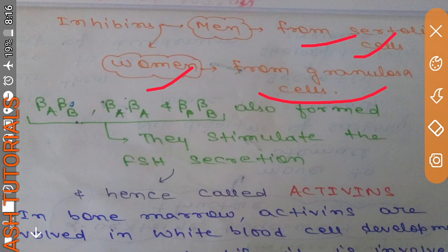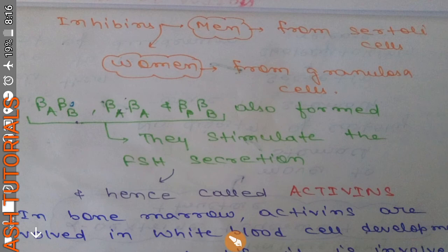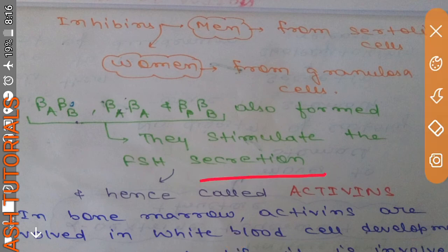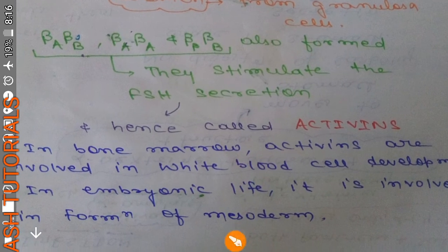So there are three possibilities: beta A-beta B, beta A-beta A, and beta B-beta B. These three are also formed. These three will not inhibit FSH secretion — instead they always stimulate FSH secretion, so they are known as activins, because they are promoting FSH secretion. Inhibin A and inhibin B both inhibit FSH secretion, so they are known as inhibins.